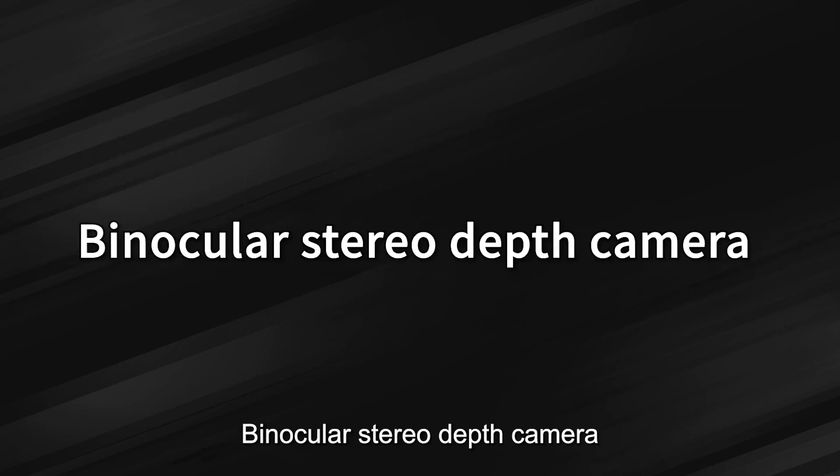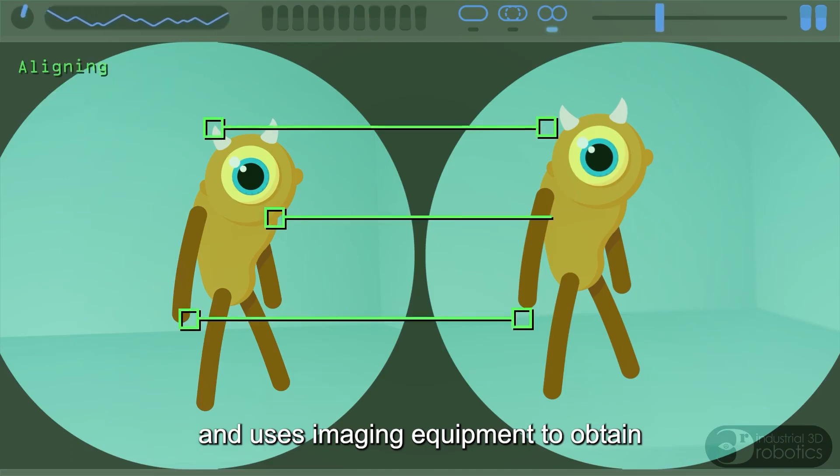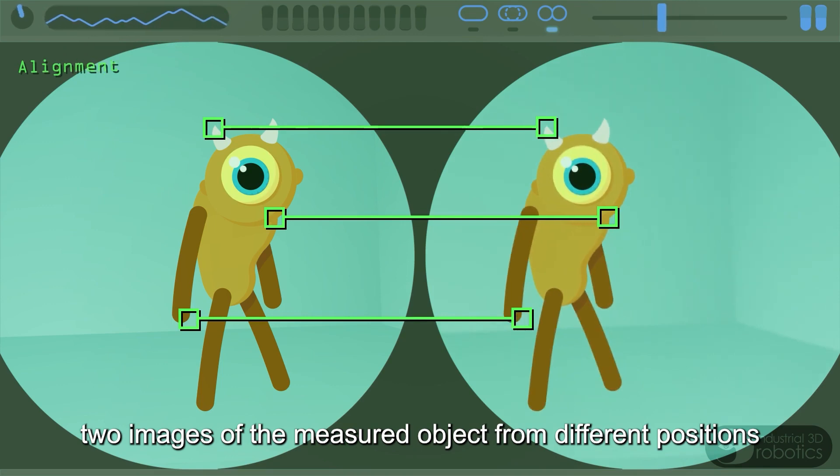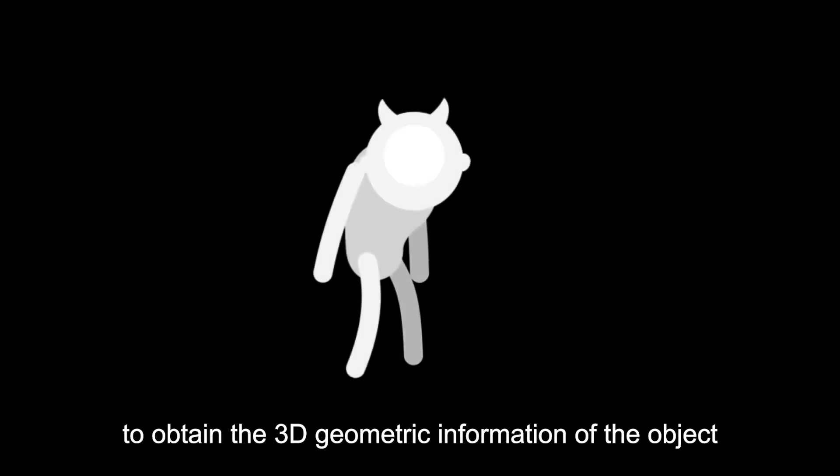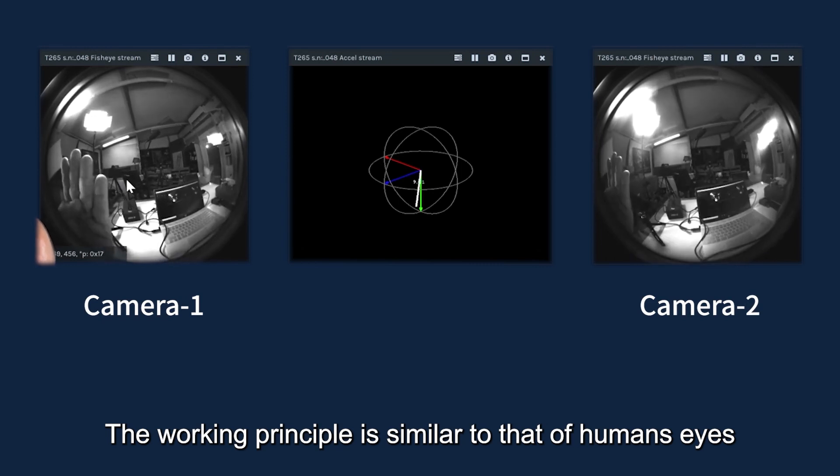Binocular stereo depth camera is based on the principle of parallax and uses imaging equipment to obtain two images of the measured object from different positions to obtain the 3D geometric information of the object. The working principle is similar to that of human eyes.